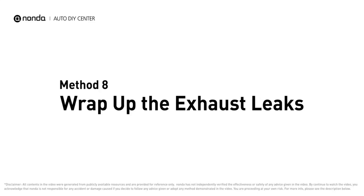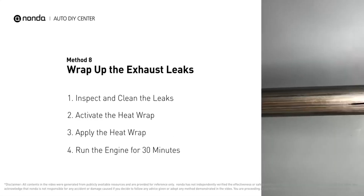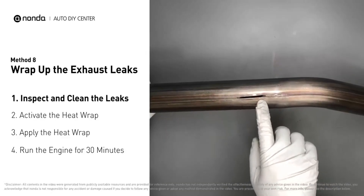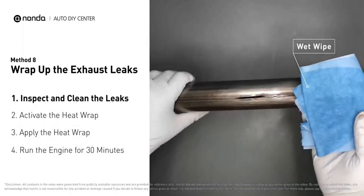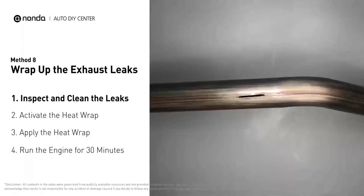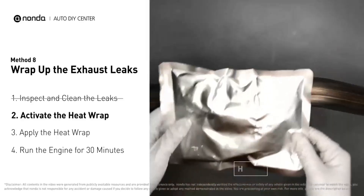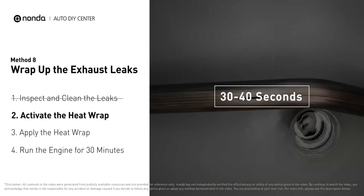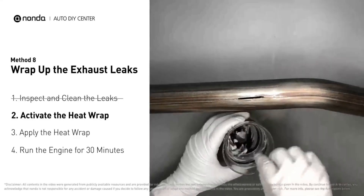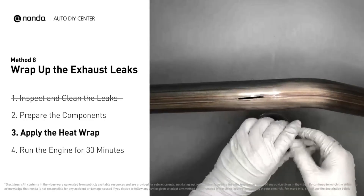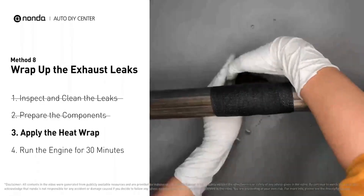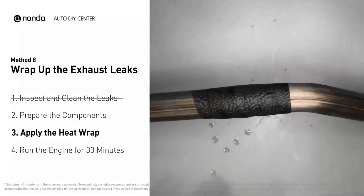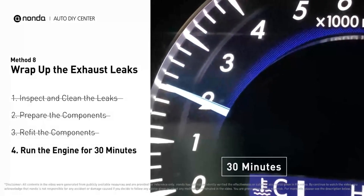Method eight: wrap up the exhaust leaks. Exhaust pipes are made out of rolled steel and have a welded seam on them — the seam will often rot and leak. First, use sandpaper and a wet wipe to clean the leaking area. Get the heat wrap and put it in water for about 30 to 40 seconds to start the activation process, then remove it and squeeze out any excess water. Wrap it around the area and overlap it a couple of inches on each side. Repeat the process 3 or 4 times, then squeeze it to make the resin go all through it. Start the car and let it run for 30 minutes so the heat cures it and makes a permanent fix.